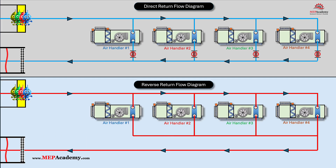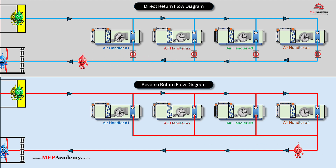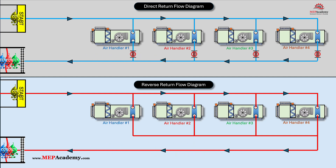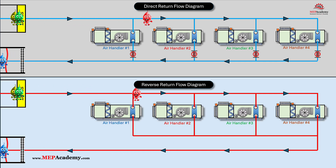Piping differences: In a direct return system, the main pipes remain the same size along the entire supply and return runs until they reach a section where flow decreases and a size reduction is needed. This is simpler compared to a reverse return system, where the design often requires a gradual reduction in pipe size along the return path as flow is picked up from each terminal unit. This consistency in sizing throughout most of the direct return system reduces complexity and makes both material handling and installation faster and easier.